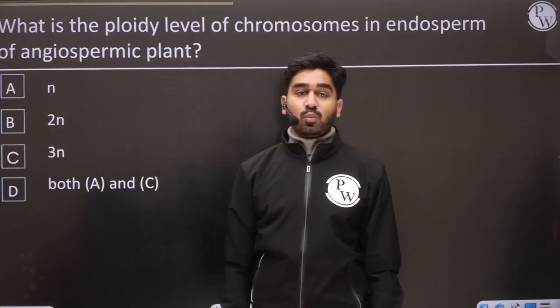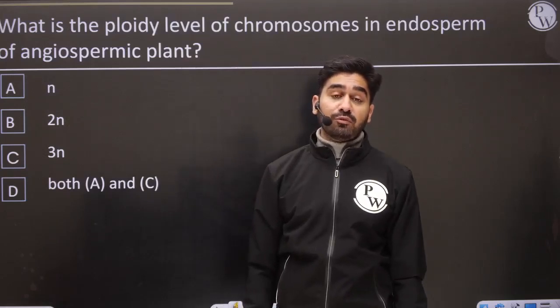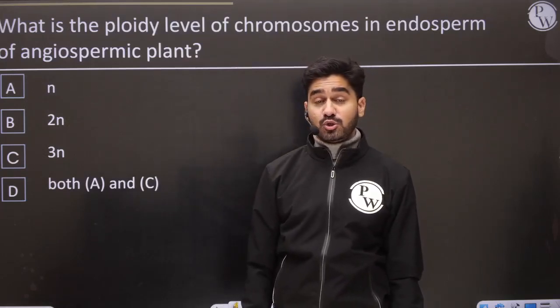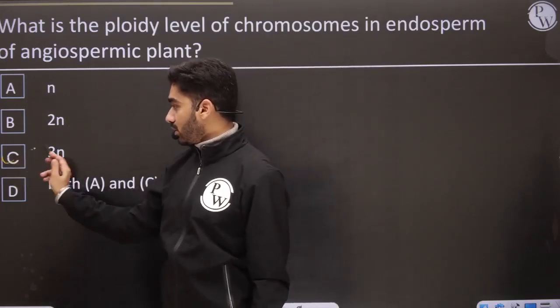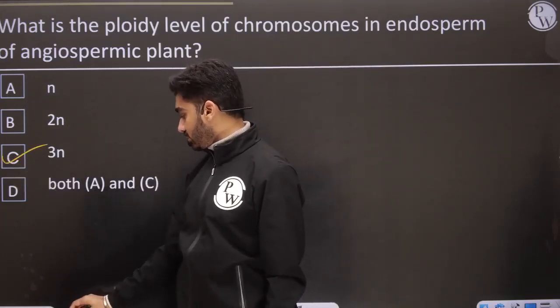Next: what is the ploidy level of endosperm in an angiosperm? Direct question — endosperm is a triploid structure.